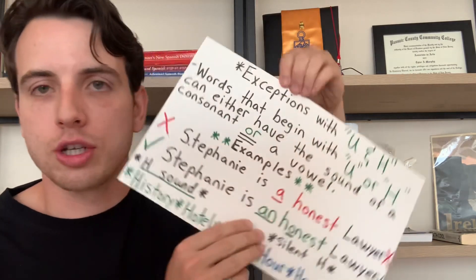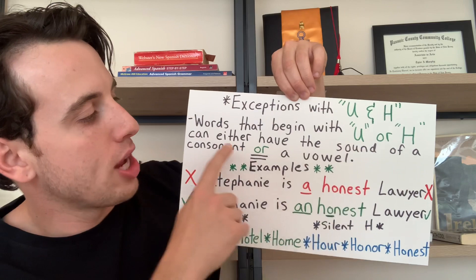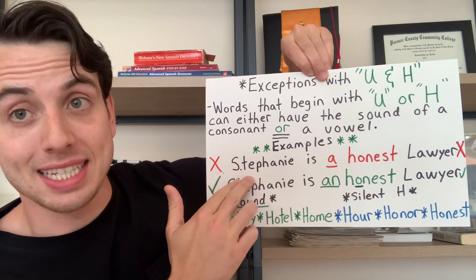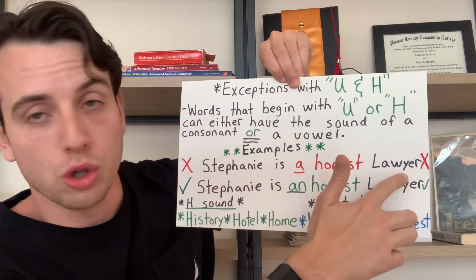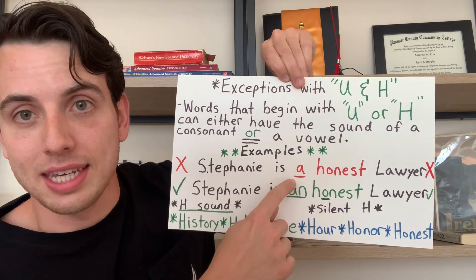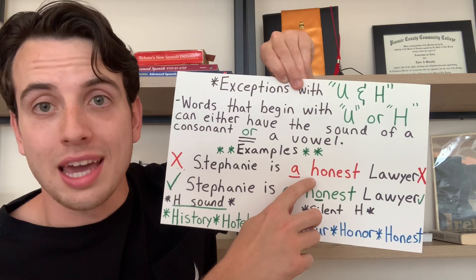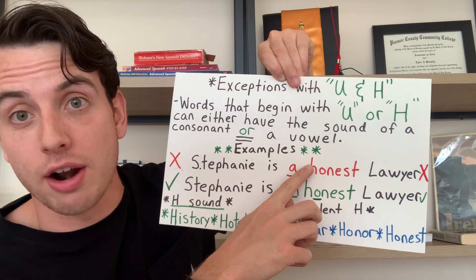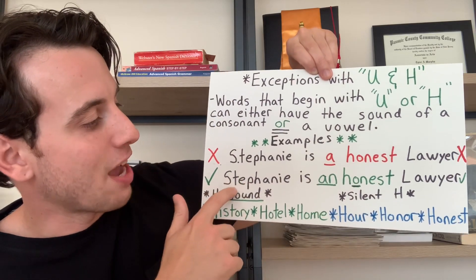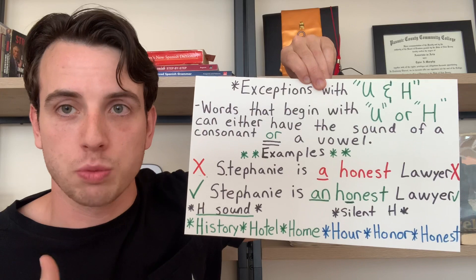There are a few exceptions to this rule, mainly with words beginning with U and H. Words that begin with U or H can either have the sound of a consonant or a vowel. For example, the wrong way to say this sentence would be 'Stephanie is a honest lawyer.' Although H is a consonant, 'honest' is pronounced without the H — it's 'honest,' not 'honest.' It's almost like the H isn't really there, so because it begins with the sound of an O, which is a vowel, we use 'an.' Stephanie is an honest lawyer. So it depends not only on the first letter, but also the sound that it makes when you begin saying the word.